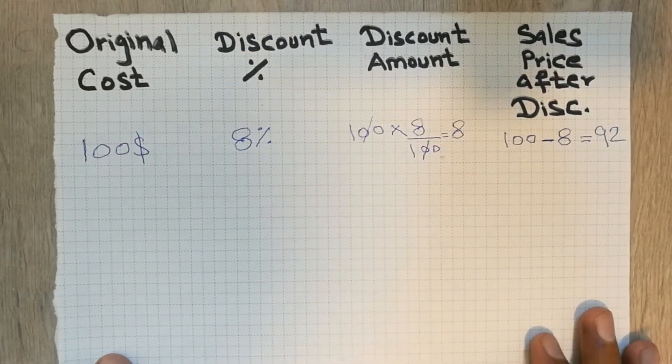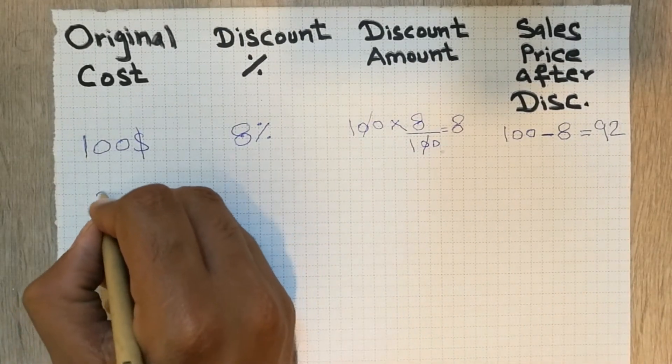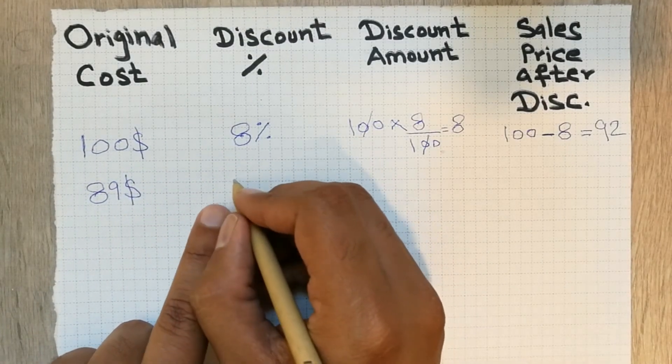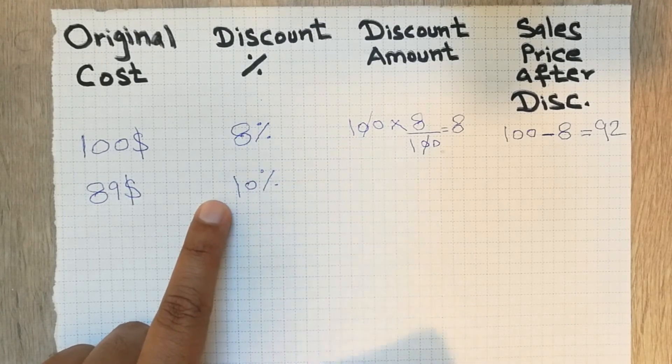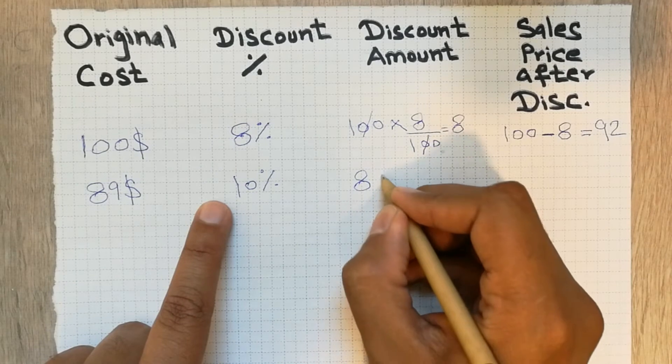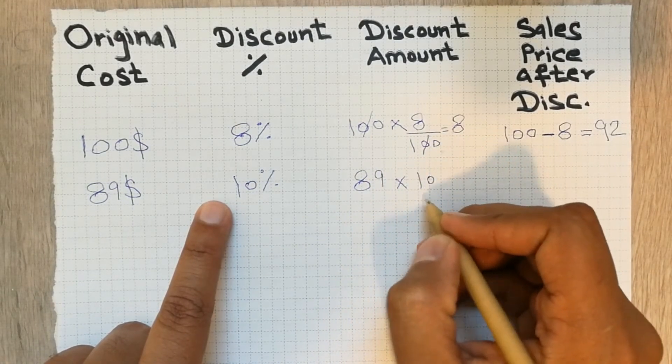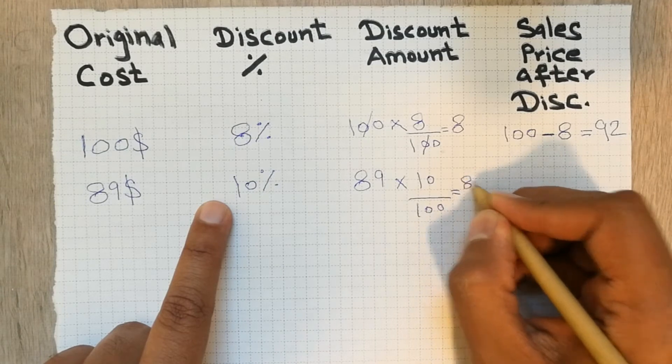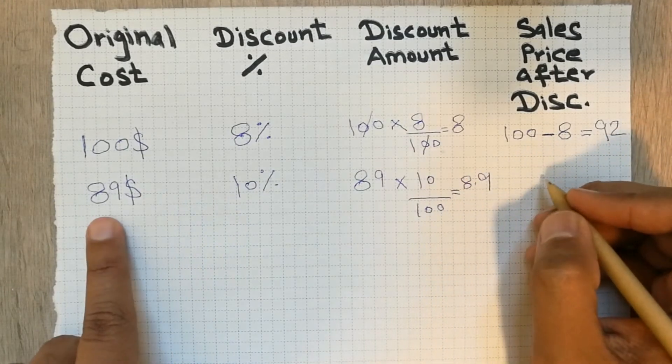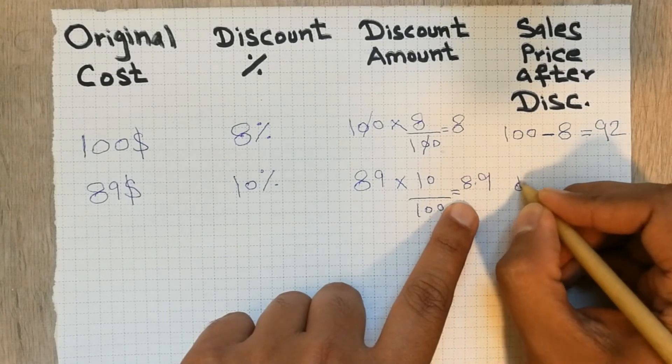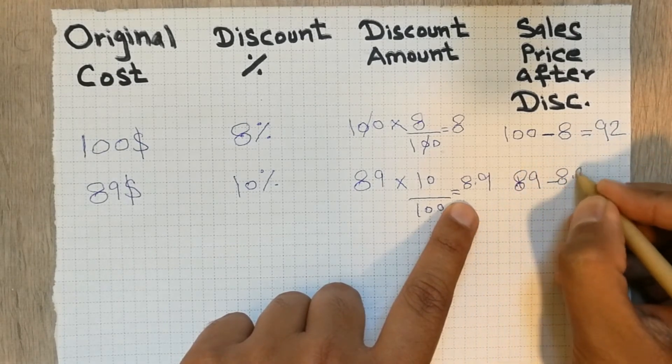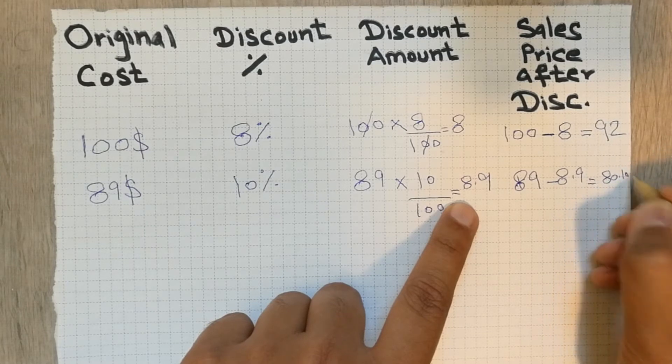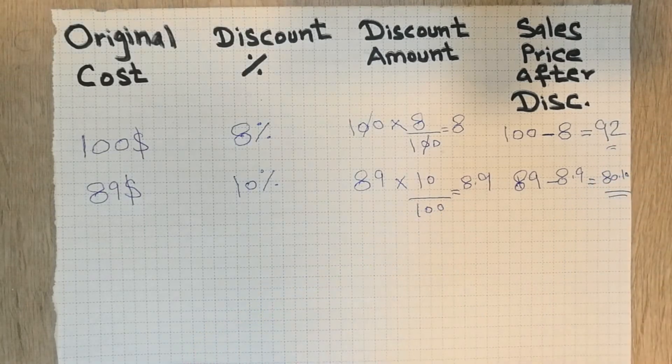Let's move to another example to make it more clear. For example, the cost of the product is $89, and the discount on that product is 10%. So we use the same thing: 89 multiplied by 10 divided by 100. When you do this calculation, the answer will be 8.9. So now 89 minus 8.9 equals 80.10. This is the answer.